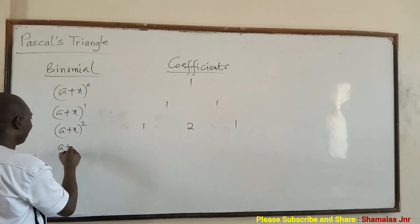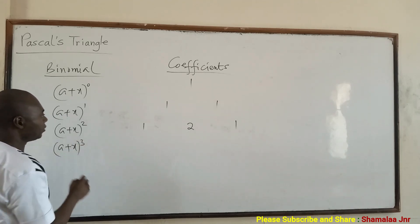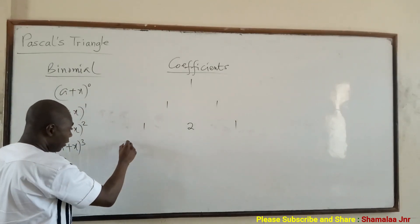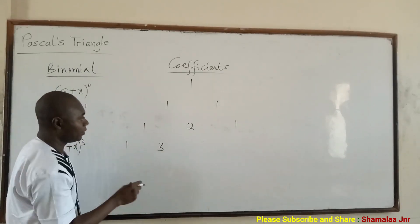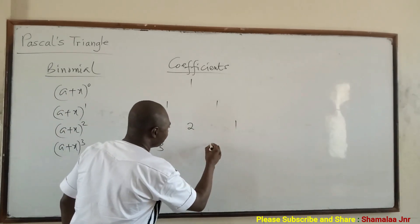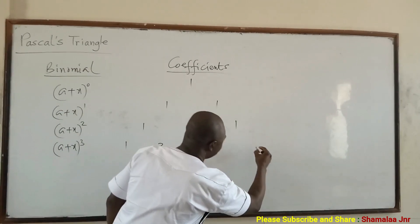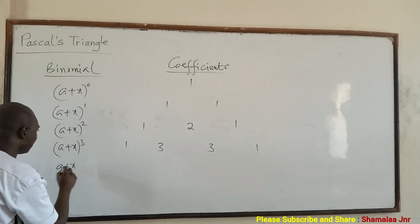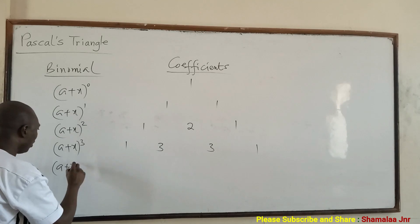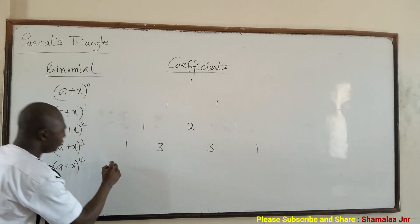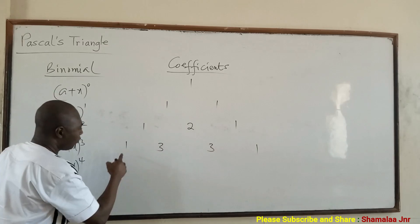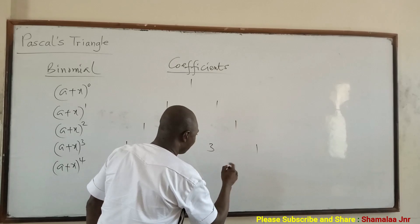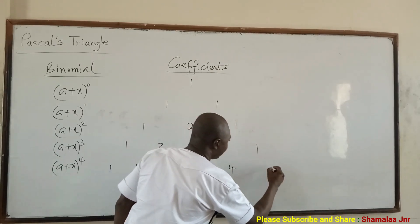When you have (a + x) raised to the power 3, write the 1. You see it's a triangle. Write 1 here, 1 plus 2 is 3 — write it here, 2 plus 1 is 3, and then write this 1 here. Then for (a + x) raised to the power 4: write 1 here, 1 plus 3 is 4, 3 plus 3 is 6, 3 plus 1 is 4, and then write this 1 here.